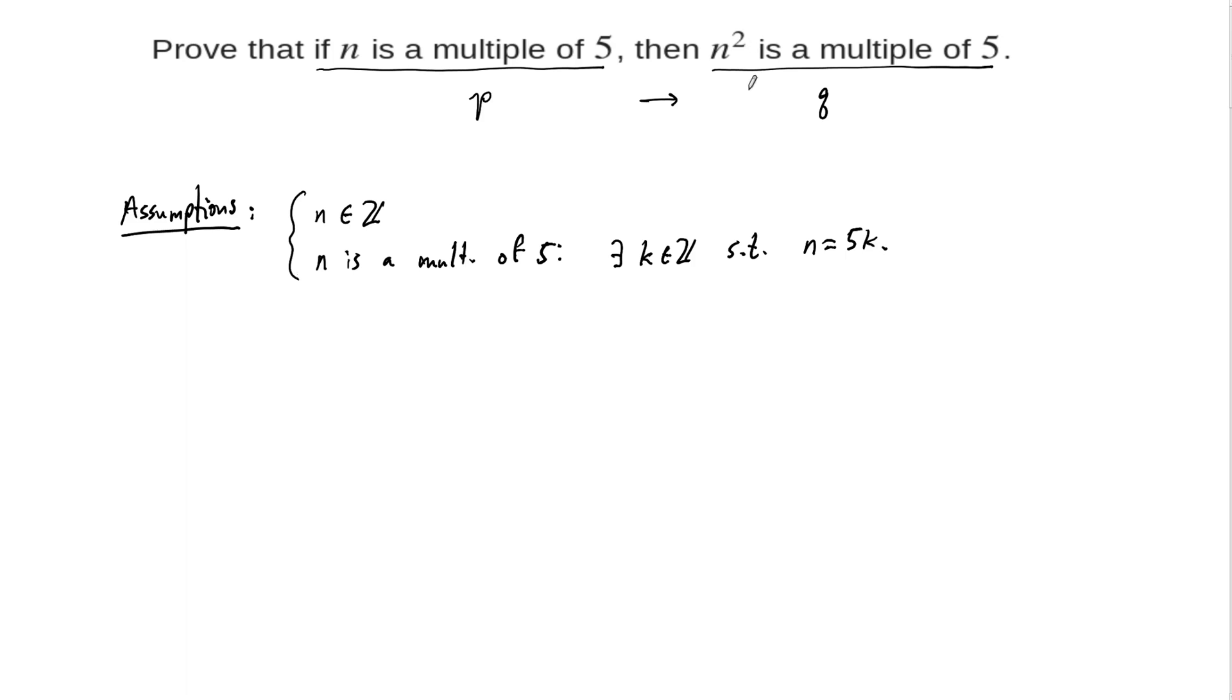We all know what squared means, right? But we could write that here as an assumption if we want. You don't have to write this every time, by the way. You don't have to list out your assumptions, but it does help sometimes. So n squared obviously means multiply n by itself, so n times n. We're ready to write the proof now, so let's do it.